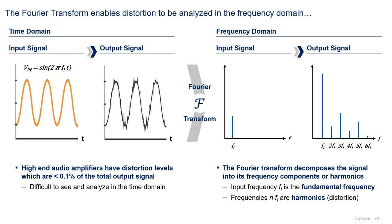Let's now get back to technical stuff. Distortion can be studied in the time domain by comparing the input and output signals. Sadly, this is very difficult, since a decent amplifier will have distortion levels of less than 0.1% at the output signal. As a result, we use the Fourier transform, a mathematical transformation that extracts the frequency components of a time domain signal and enables us to analyze it in the frequency domain.